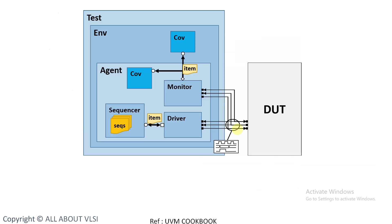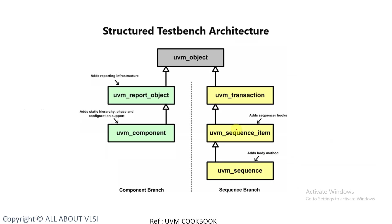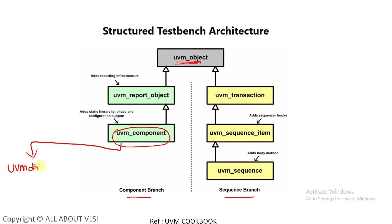In UVM the test bench is a little different. UVM has built-in classes. The main parent class is uvm_object. From this class, two branches are evolved: one is the component branch and another is the sequence branch. In the component branch, the parent class is uvm_report_object, from which we get uvm_component, and from uvm_component more classes are derived like uvm_driver and uvm_monitor.